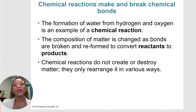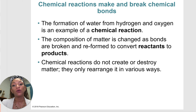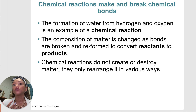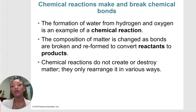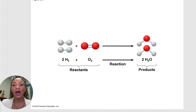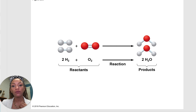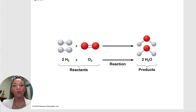Chemical reactions make and break chemical bonds. Water is formed from hydrogen and oxygen — that's an example of a chemical reaction. Matter is changed as bonds are broken and reformed, but it is not destroyed — it's only rearranged in various ways, just like energy is never created nor destroyed, only converted from one form to another. For example, two hydrogen atoms plus one oxygen molecule react to produce two water molecules. The molecules are just converted from one form to that nice V-shape we see in water.